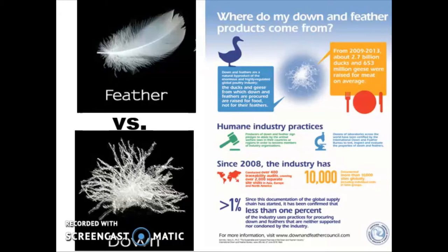Both down and feathers can come from either ducks or geese. Geese tend to produce more down so they're a little bit more popular for this production. In either case, this is really going to be a byproduct, not a primary product, because we really only harvest these from animals already being harvested for meat. There used to be practices where that would be harvested while still alive, but that's not very ethical and the industry really doesn't operate that way anymore.